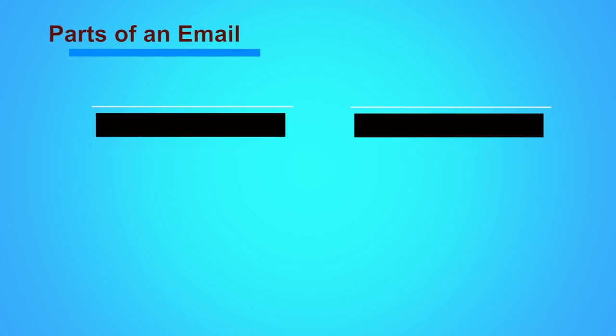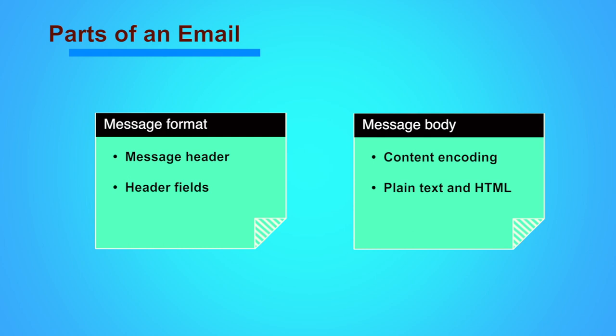Let us now bring our focus on the email message. An email message has many parts and it includes those parts which we do not create, apart from the message itself. The email contains information about the message, that is the metadata of an email. Email message can be looked at in two basic parts: the metadata or information about the message and its source and destinations, and the message format. The message format mainly consists of the message header and the message body, where we have content encoding as well as text or HTML form.